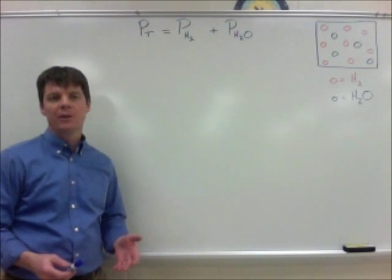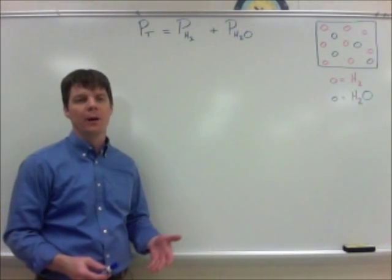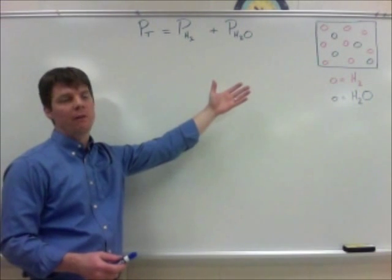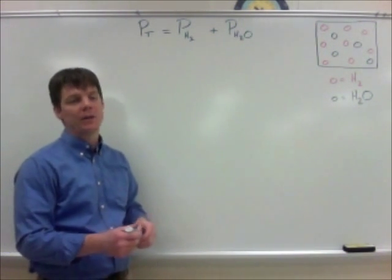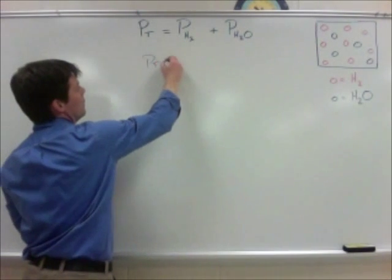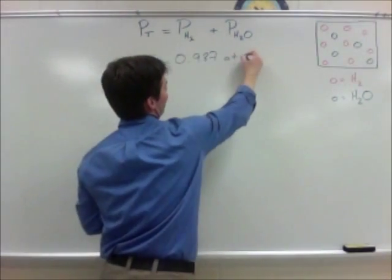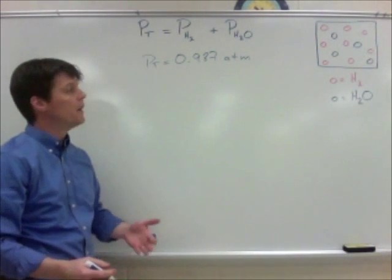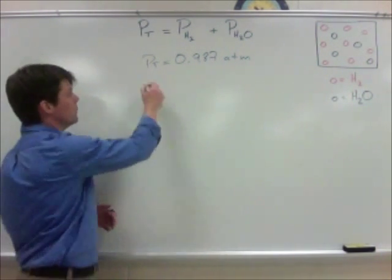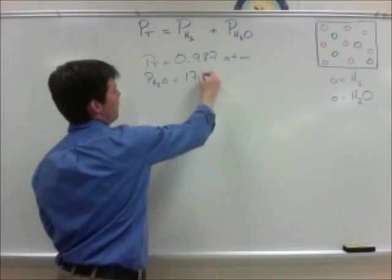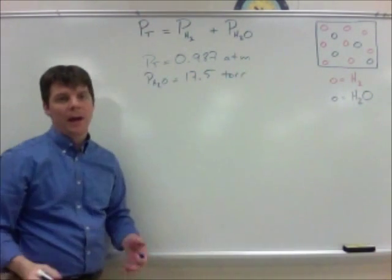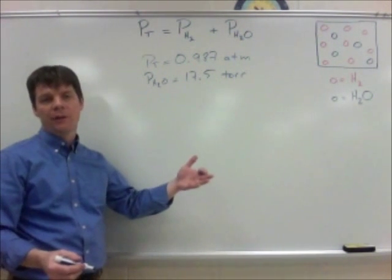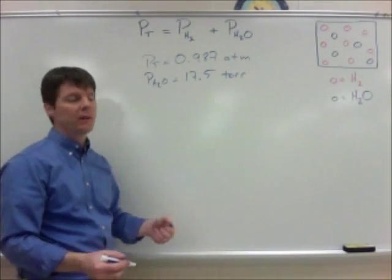Our first step in problem solving is to identify both our known and unknown variables. We were given the total pressure inside of the container, which was equal to 0.987 atmospheres. We were also provided the vapor pressure of water, which was 17.5 torr. And what we're trying to find out is the pressure of the hydrogen gas present inside of that container.